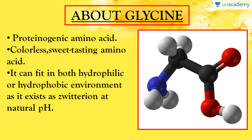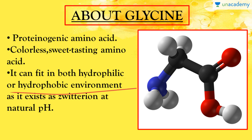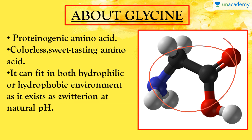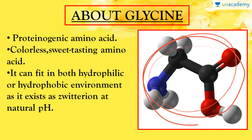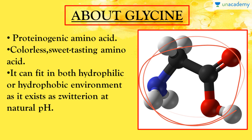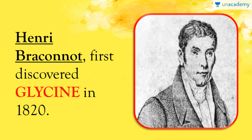Besides being achiral, glycine can exist as a zwitterion at neutral pH, and it can fit into both hydrophilic and hydrophobic environments because it exists as a zwitterion. This is the molecular structure of glycine — how glycine looks.